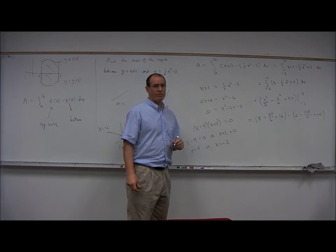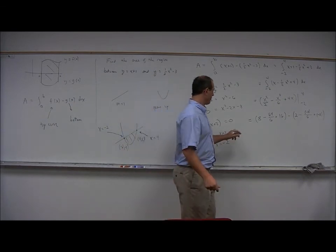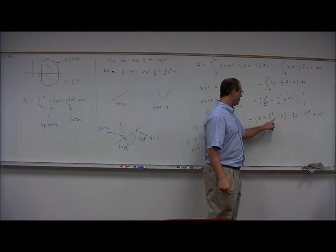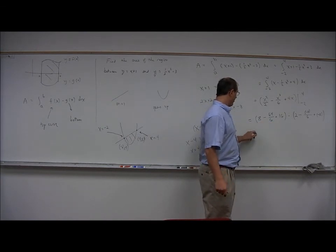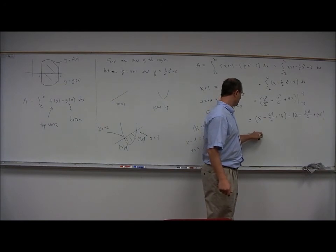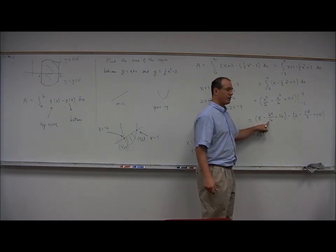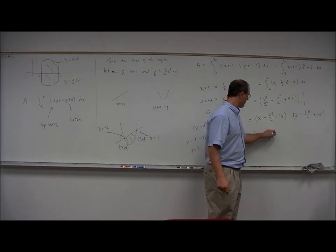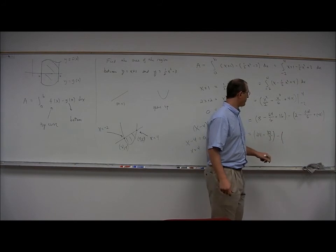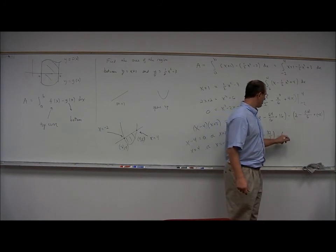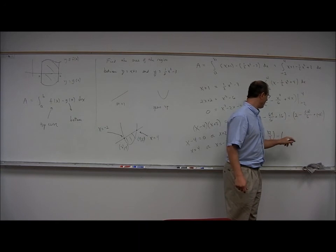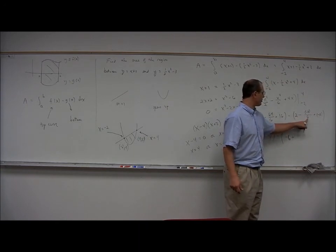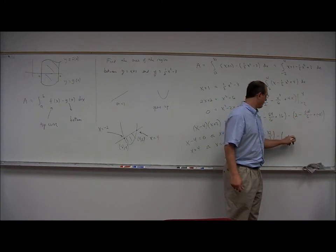So now we just have to do a little bit of arithmetic to get the final answer. This is equal to 8 plus 16 is 24, minus let's write this in terms of thirds, 32 thirds. And then we have 2 minus 8, which is negative 6, and then double negative there makes plus. And again in terms of thirds, 4 thirds.